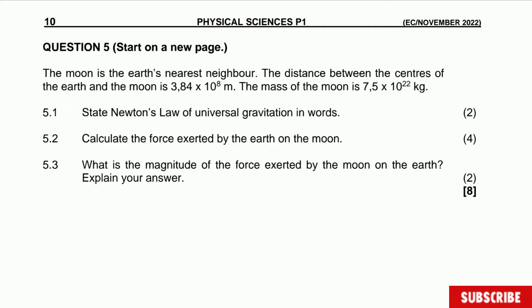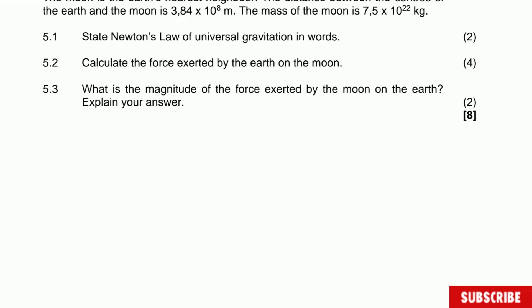This question says the moon is the earth's nearest neighbor. The distance between the center of the Earth and the moon is 3.84 times 10 to the 8 meters. And the mass of the moon is 7.5 times 10 to the 22 kilograms. Question 5.1 state Newton's law of universal gravitation in words. So let's take that one real fast.